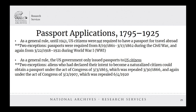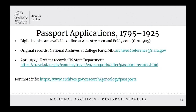Passport applications from 1795 to 1925 are maintained in their original paper format at the National Archives at College Park, Maryland, with digital copies available online through Ancestry.com and Fold3.com. Note that Fold3 only has through 1905 posted online. If you're looking for a passport issued from April 25, 1925 through the present, your request will go through the U.S. State Department.